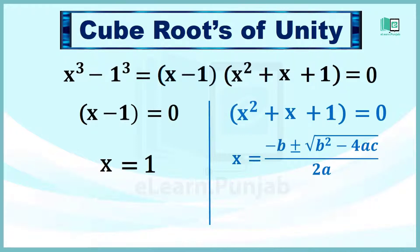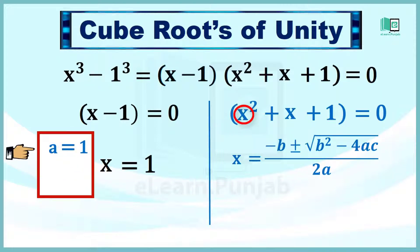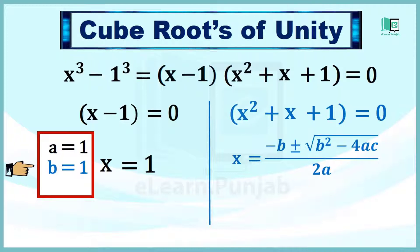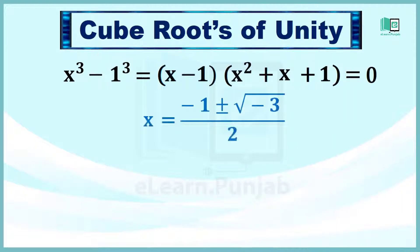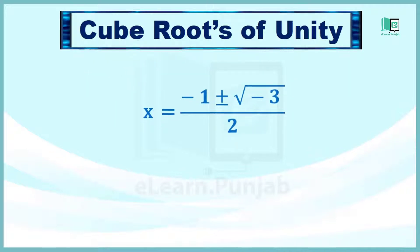Quadratic formula के तहत x बराबर होता है: minus b plus minus under root b square minus 4ac over 2a। Values put करने से simplify करते हैं, जिससे हमें x is equal to minus 1 plus minus under root minus 3 over 2 हासिल होगा।